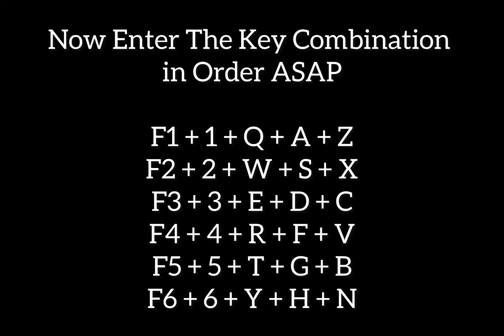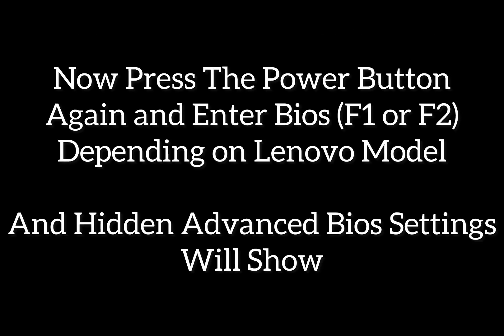Once the screen is blank, please type in the key combination as soon as possible. Then press the power button and enter back into BIOS, and you will see the unlocked advanced BIOS settings — the hidden menu settings will appear.